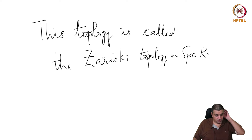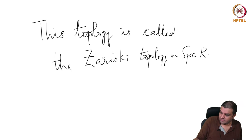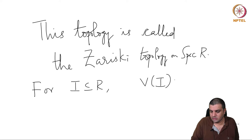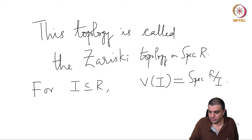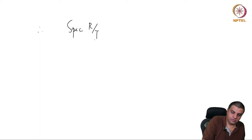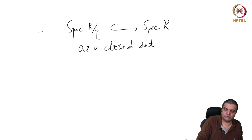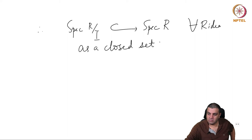This is called the Zariski topology on spec R. One observation we would like to make is that for I inside R, the set V(I) is the same as spec of R mod I. In other words, there is a map — spec of R mod I injects into spec of R as a closed set. The image is a closed set of spec R for every ideal I.